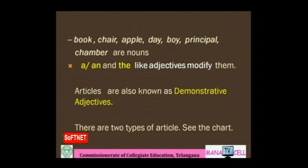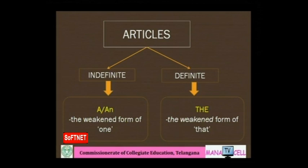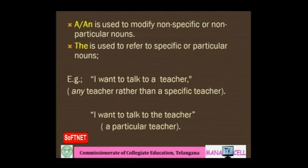There are two types of articles. Under indefinite, we have 'a' or 'an' — the weakened form of 'one'. Under definite, we have 'the' — the weakened form of 'that'. 'A' or 'an' is used to modify non-specific, non-particular nouns. 'The' is used to refer to specific or particular nouns. For example: 'I want to talk to a teacher' means any teacher; 'I want to talk to the teacher' means a particular teacher.